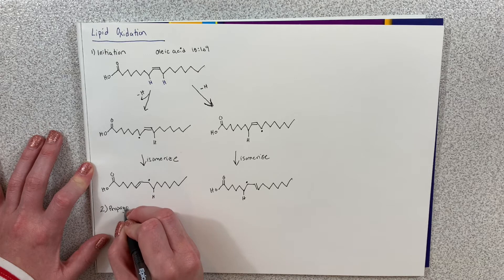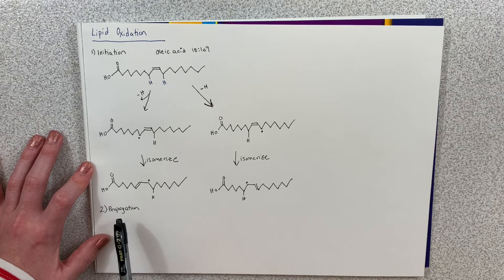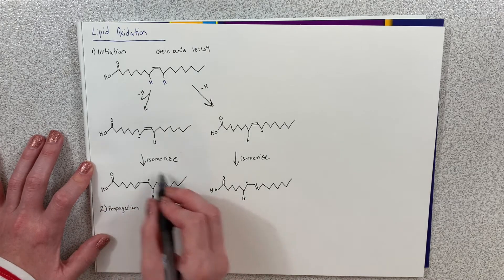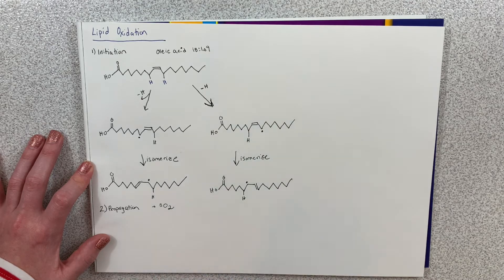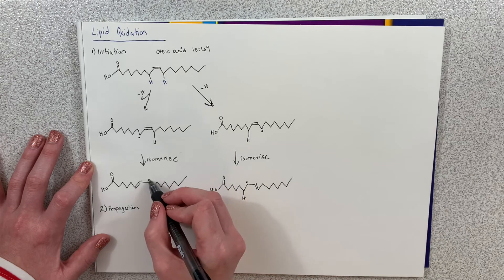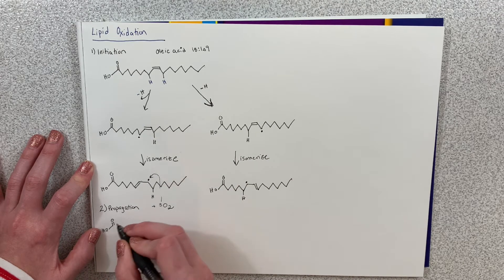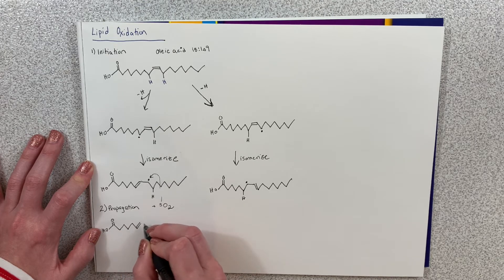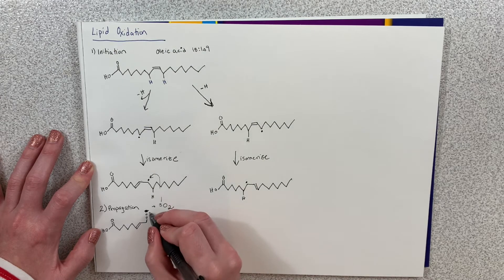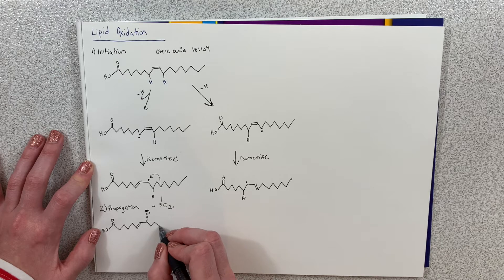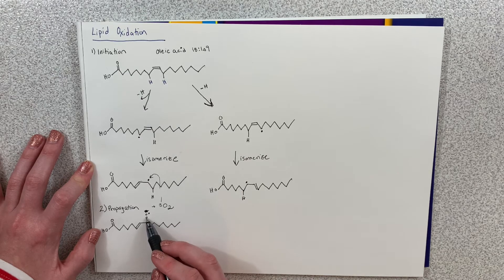Step two is propagation, which means it keeps going and going and going. In propagation, you have triplet oxygen added to one of these radicals, and that makes a hydroperoxide. So let's start with this molecule and add triplet oxygen. What triplet oxygen is going to do is add itself right where this free electron is — it will add right to that carbon. So we just have two oxygens for now, and it will have a free extra electron right there. Let's finish this — all it did was add the oxygen there. We can see what this will look like with the other molecule too — let's add triplet oxygen again, and it's going to add itself right there. So we just need to finish this structure.